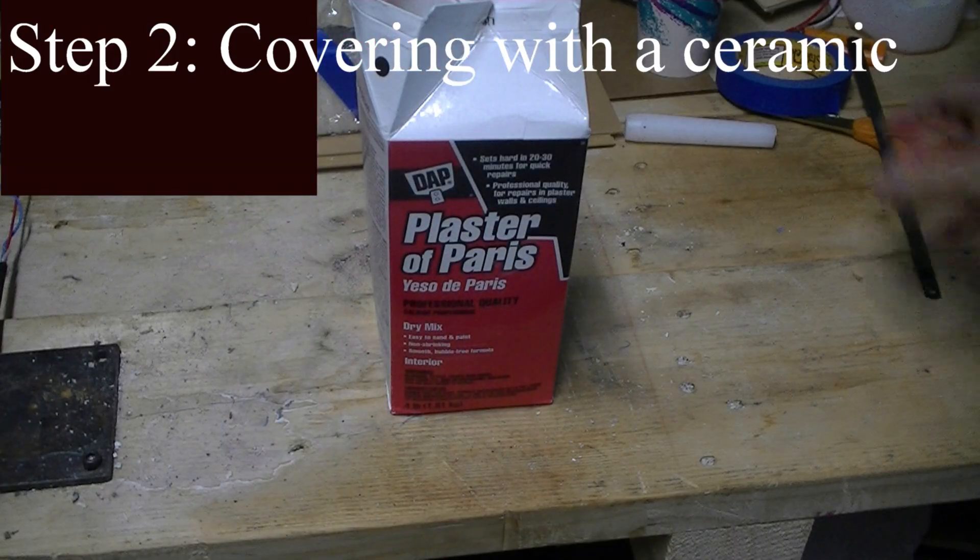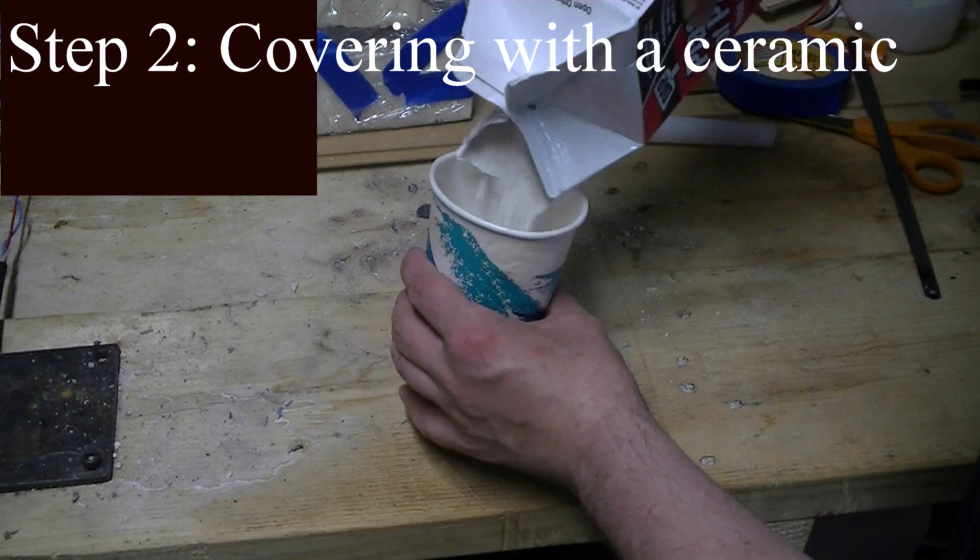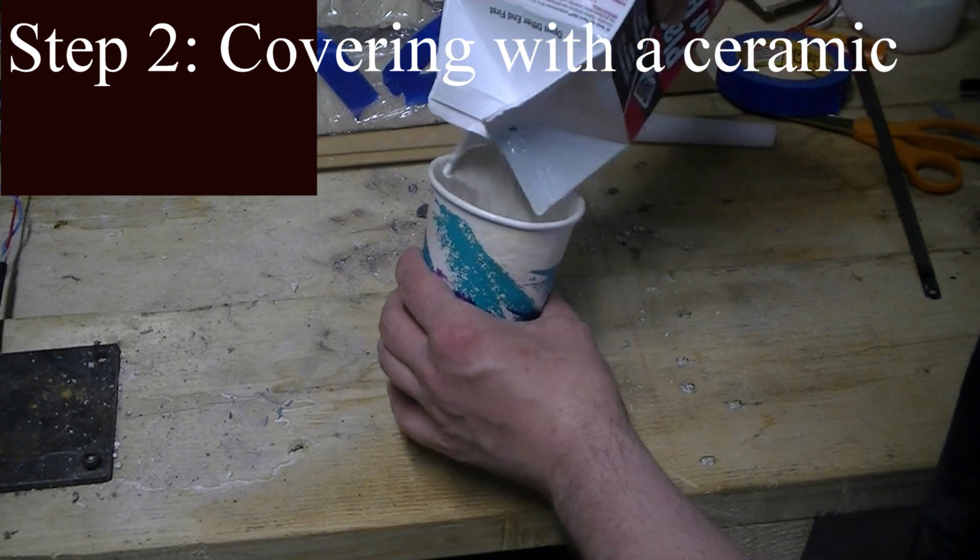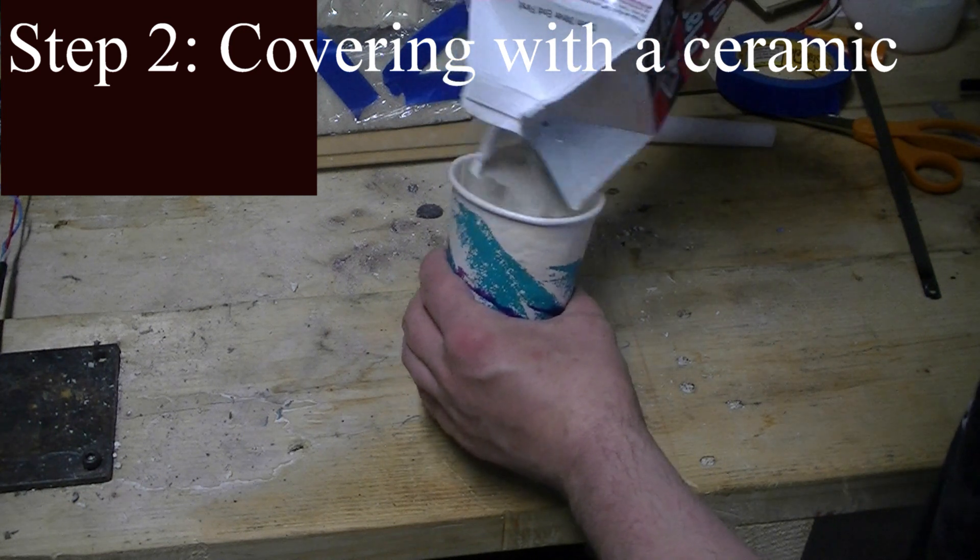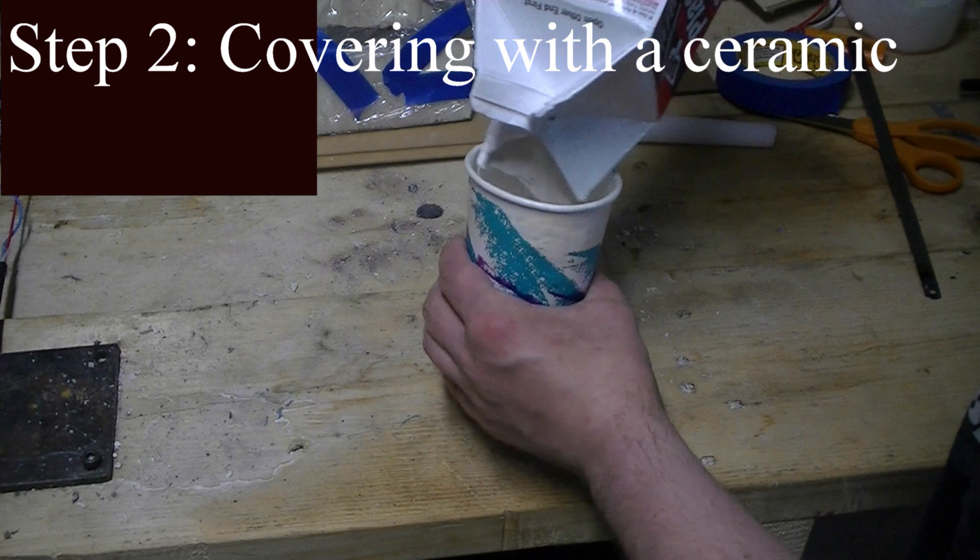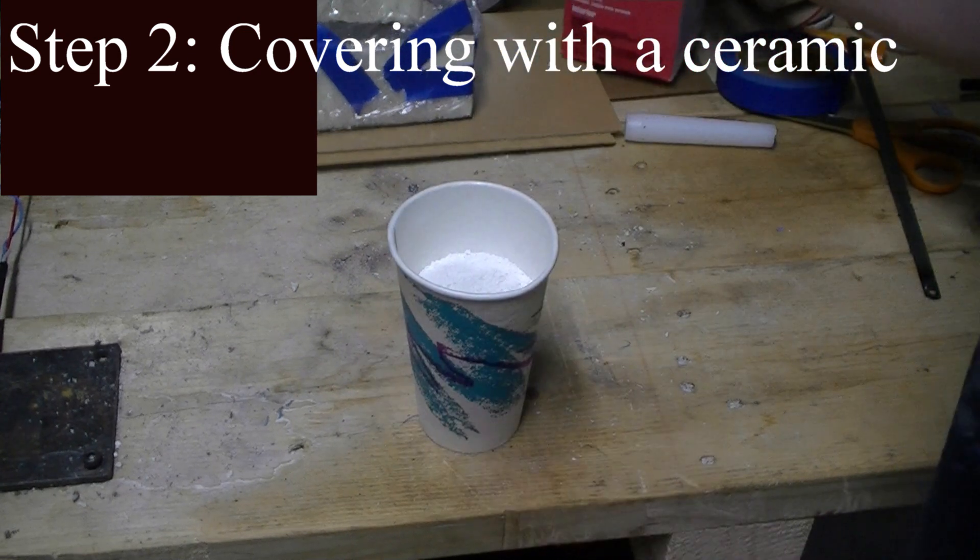Now we're at the phase where we're covering our wax preform with a ceramic. In this case, we're using plaster of Paris. We mix up some plaster of Paris with water, pour this into a mold, put our dragon in the mold and then pack the rest around the dragon.